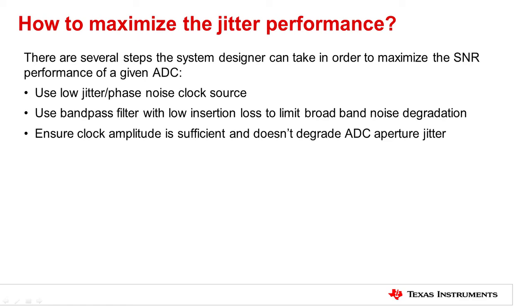So what can be done to minimize the clock noise impact to the SNR of the ADC? There are a few different options that are available to the system designer. First, select a clock source with low enough jitter or phase noise. Second, use a bandpass filter with low insertion loss to limit the broadband noise degradation. And third, ensure that the clock amplitude at the ADC clock input pins is sufficient to not degrade the ADC aperture jitter.